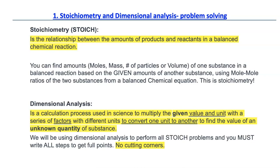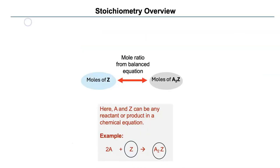If you cut corners, you will get questions wrong. So let's look at stoichiometry overview. Say you have an equation where 2A plus Z, these are fake elements, gives you A₂Z.